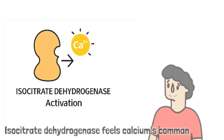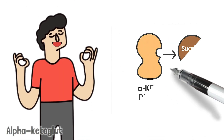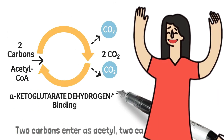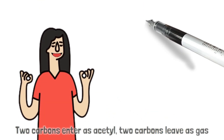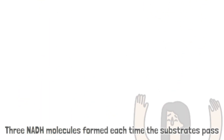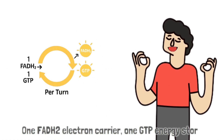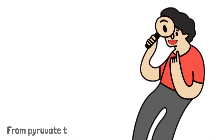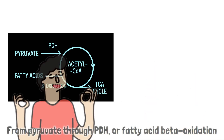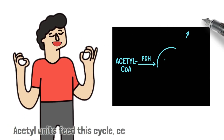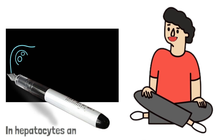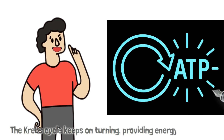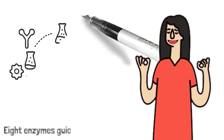Isocitrate dehydrogenase answers calcium's commanding call; alpha-ketoglutarate dehydrogenase complex and succinyl-CoA control it all. Two carbons enter as acetyl, two carbons leave as CO2. Three NADH molecules formed each time the substrate passes, one FADH2 electron carrier, one GTP energy store — oxaloacetate regenerated, ready to process more. From pyruvate through PDH or fatty acid beta-oxidation, acetyl units feed this cycle, the central metabolic station.